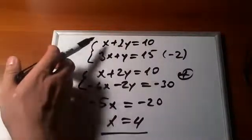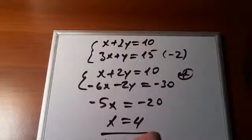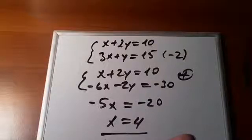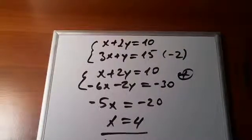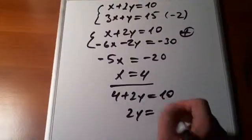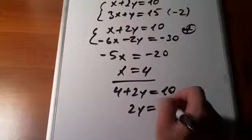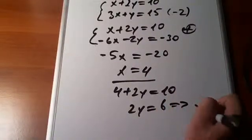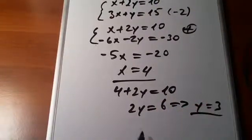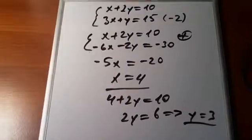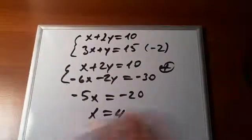And we'll just go back, plug it in here. We'll have 4 plus 2y is equal to 10. 2y is equal to 6. Therefore, y is equal to 3. Same solutions as we found before. And let's look at our final example.